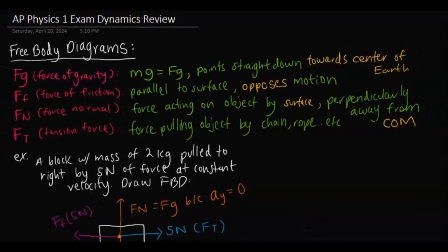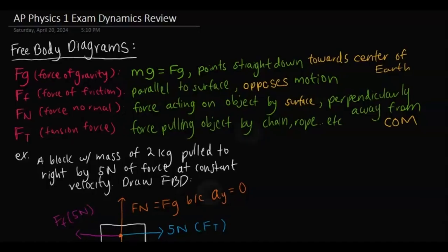The first topic you need to know is how to draw free body diagrams — you have to know what all the forces are. The force of gravity, Fg, equals mass times the gravitational constant and always points straight down toward the center of Earth. Force of friction is parallel to the surface and opposes motion. Force normal is the force acting on the object by the surface, acting perpendicularly away from the object. And then there's tension force, or applied force, where the force is pulling the object by a chain, rope, or similar means.